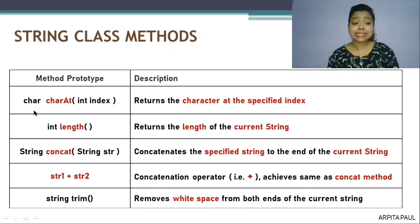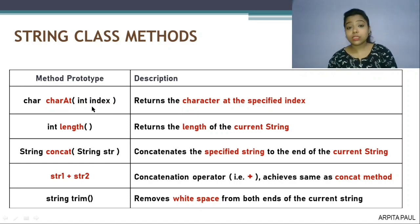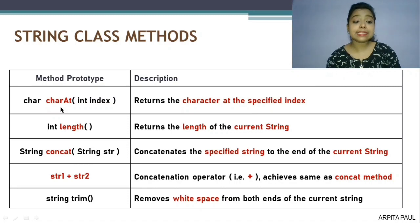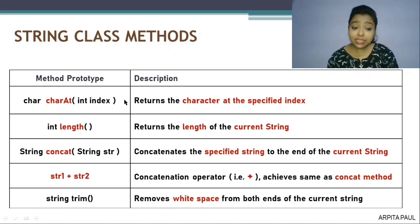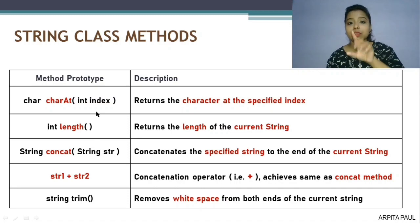The first method you can see is charAt — charAt(int index). The purpose of this method is it returns the character at the specified index. So if you want to take out a specific character from a string, we will use the charAt method. For that we will declare char, then charAt, and within the bracket we will provide the index number of the character we want to take out. I will show the example after explaining all the string methods.